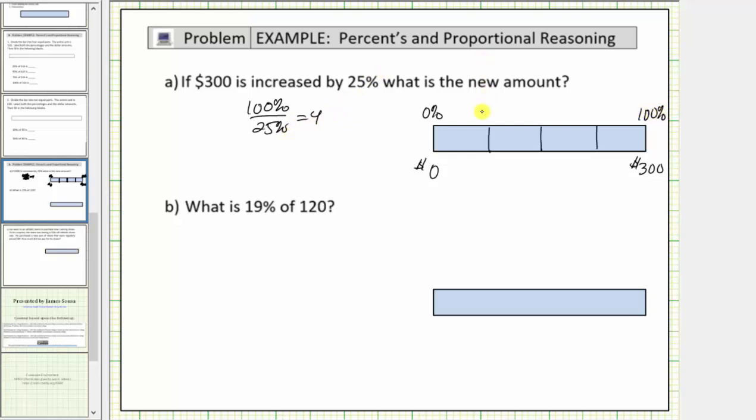So we have 25%, 50%, 75%, and 100%. And now we'll divide 300 by four to determine what to count by along the bottom.